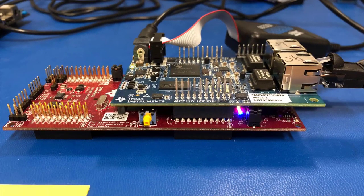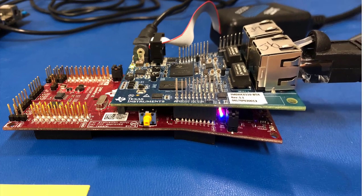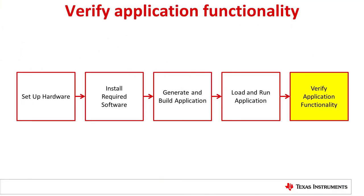Power cycle the C2000 board and wait for the LEDs to light up. Then click the reset button on the AMIC 110. The LEDs should light up as shown on the screen. Now that the applications are running, we can verify functionality by using the TwinCAT3 program.